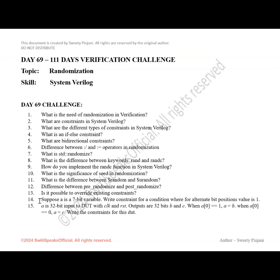Then there are a few coding examples. Suppose you have a 7-bit variable. You need to write a constraint for a condition where at alternate bit positions the value is 1. The remaining values can be anything — just at the alternate bit positions the value should be 1.